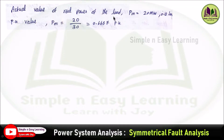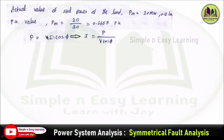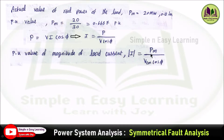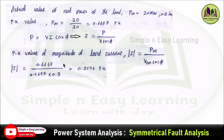The actual real power of the load P_M equals 20 MW (20,000 kW) at 0.8 leading power factor. Per-unit value equals actual value divided by base value: 20 divided by 30 equals 0.6667 per unit. Since P = VI cos φ, the load current magnitude I equals P divided by (V_TM × cos φ). Substituting per-unit values: P_M = 0.6667 divided by (V_TM = 0.9697 × cos φ = 0.8), giving a load current magnitude of 0.8594 per unit.